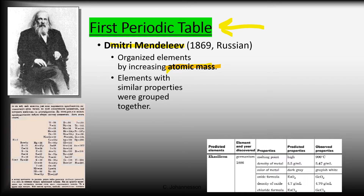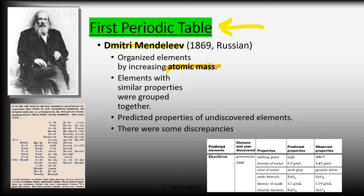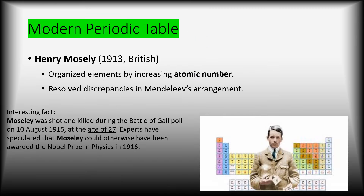He put elements with similar properties together. For example, he might find a couple of elements that were very hard and metallic and put those together on the periodic table. This helped him start predicting some properties of undiscovered elements — he could say there are probably some others out there with these same properties. There were some problems with his periodic table, though — it didn't quite fit together perfectly.